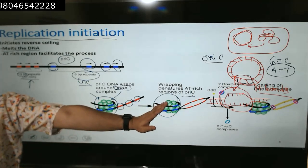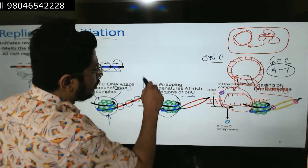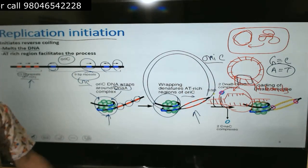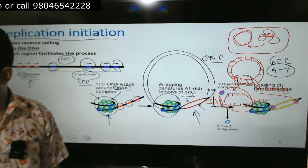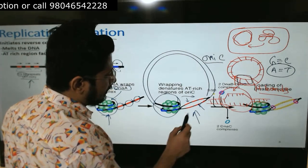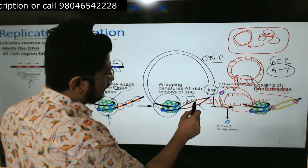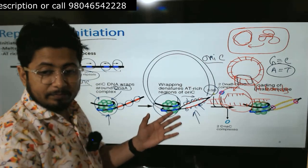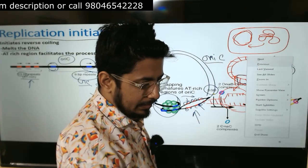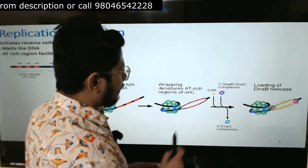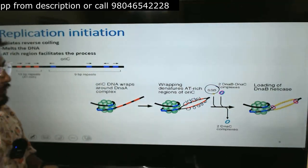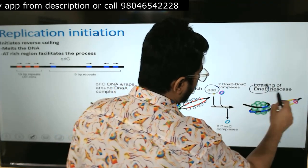DNA melting is done this way. Once melting is done — let's assume this is the whole circular DNA, and this is the only portion where melting begins — we have two single-stranded DNAs that open up. Then single-stranded binding proteins, or SSBs, start covering each individual single-stranded DNA to prevent them from re-ligating. After melting, SSBs bind to prevent re-annealing, and then another protein comes in known as DnaB, which is also known as helicase.